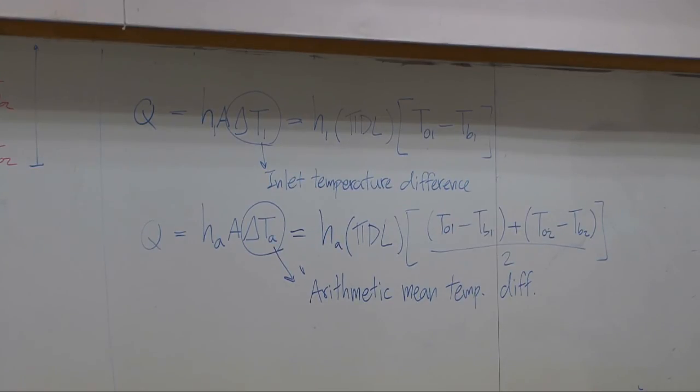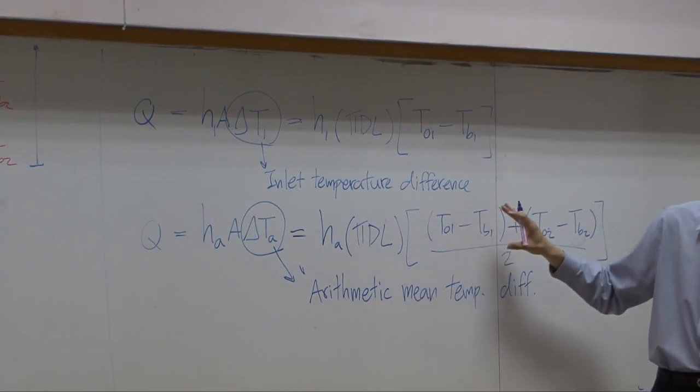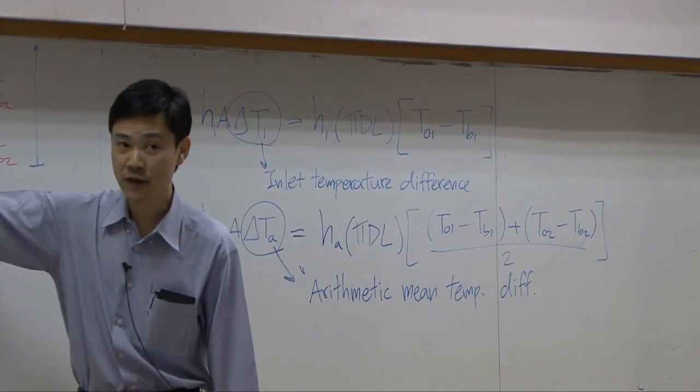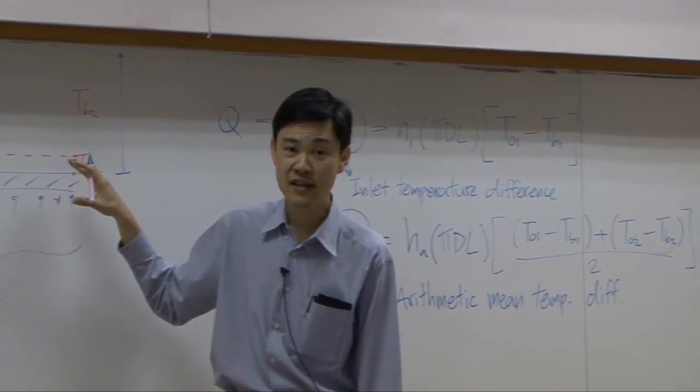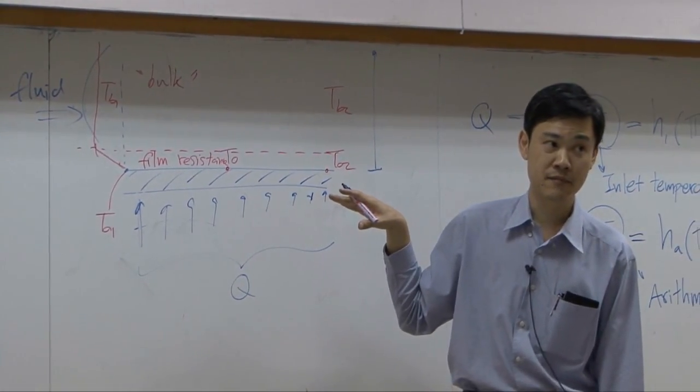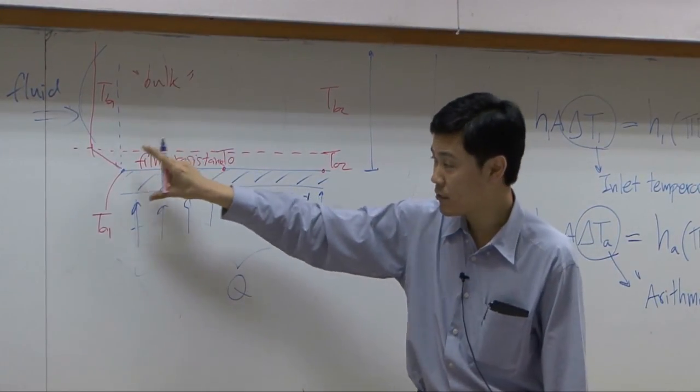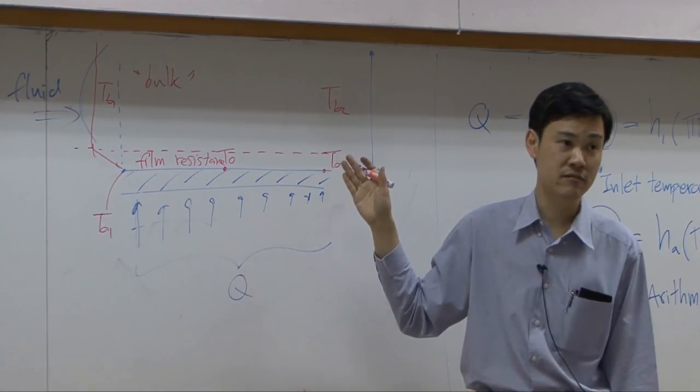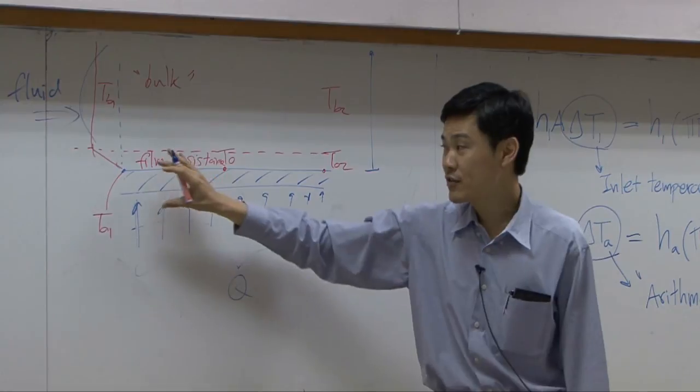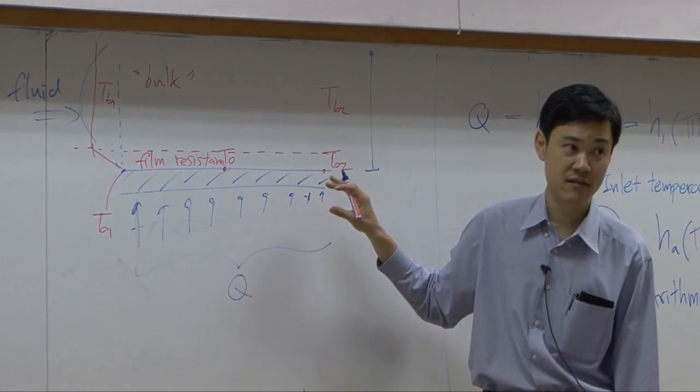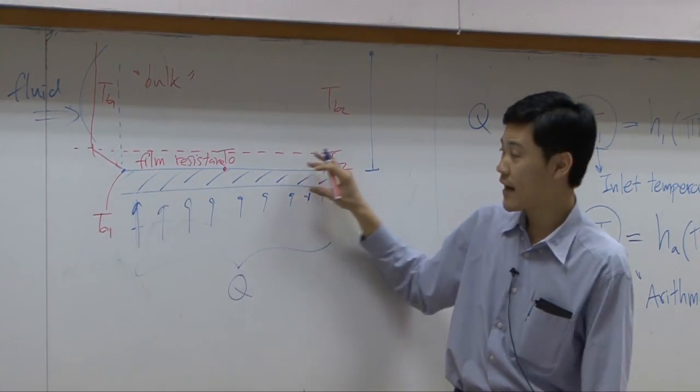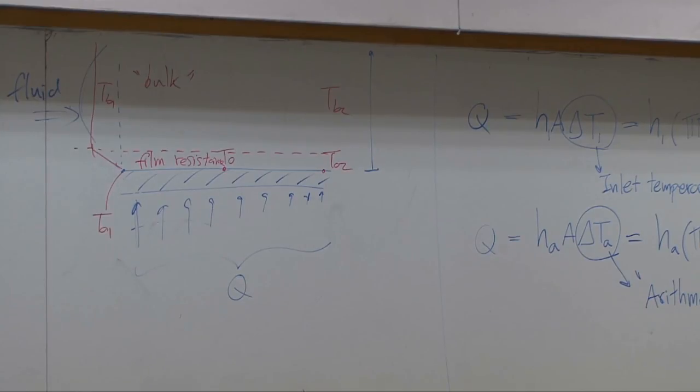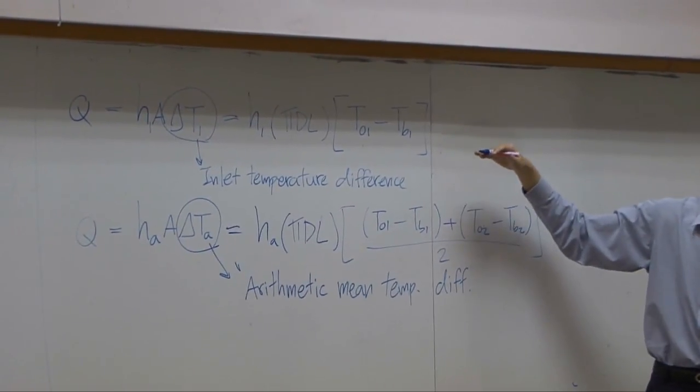Arithmetic mean temperature difference would give you better results if you think that temperature difference here and there, along the way, would change with respect to position linearly. If the delta T at the input and output and in between change linearly, then finding average is supposed to be correct. However, sometimes delta T along the way may not change linearly. Sometimes delta T at the input here is very big and down here is very small. Along the way may be non-linear. So using arithmetic mean may not be correct either. But of course, it is better than using only from the inlet point.